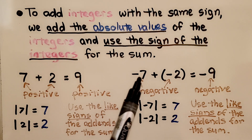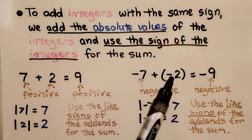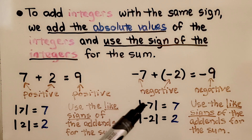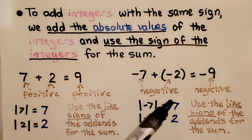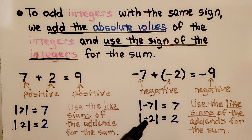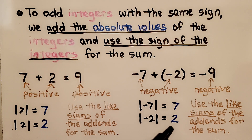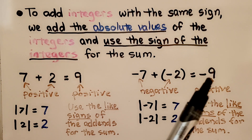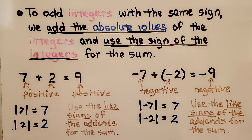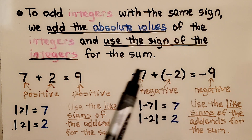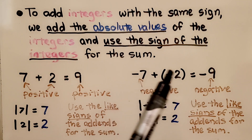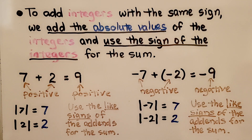Here we've got a negative 7 plus a negative 2. The absolute value of negative 7 is 7 — it's 7 jumps from zero. And the absolute value of negative 2 is 2 — it's 2 jumps from zero. We use the like signs of the addends for the sum: 7 and 2 is 9, and they both have a negative sign, so the sum is negative.